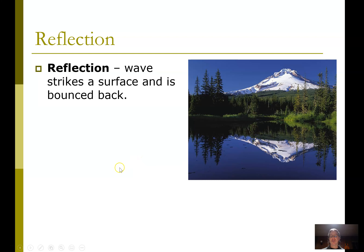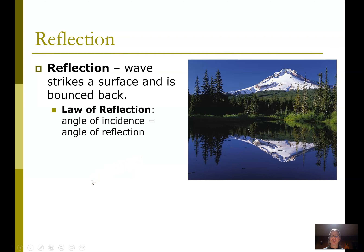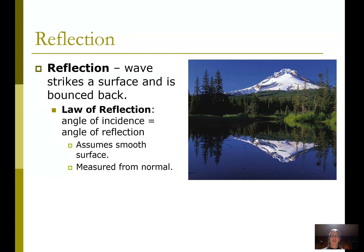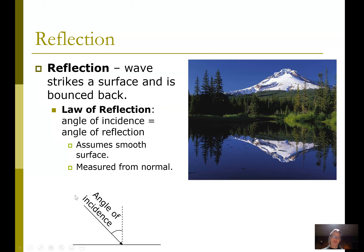As a wave hits a surface, it comes off the same as it hit. The law of reflection says it comes off at the same angle as it came in, assuming a smooth surface. We always measure this to the normal — a line drawn perpendicular to the surface. We often use a ray diagram. The angle of incidence coming in is going to be the same as the angle of reflection.